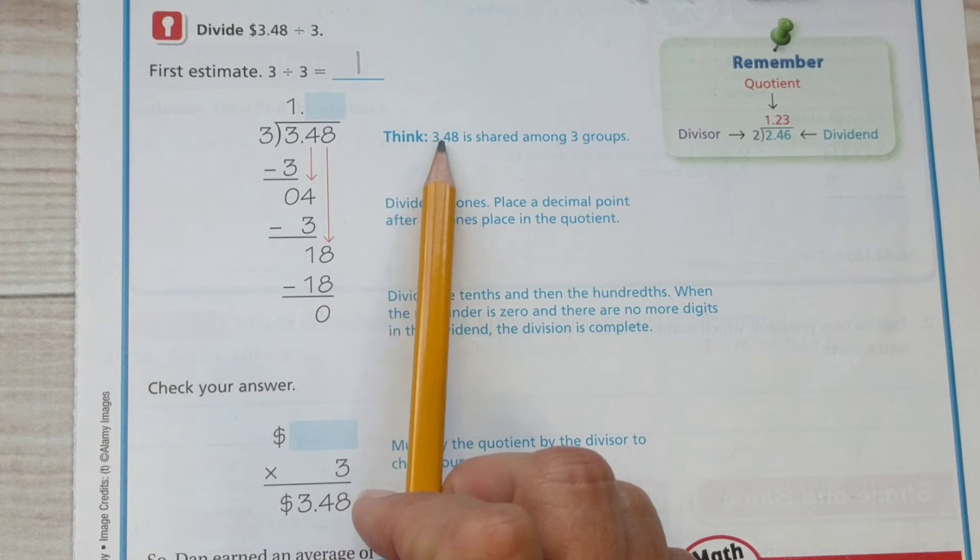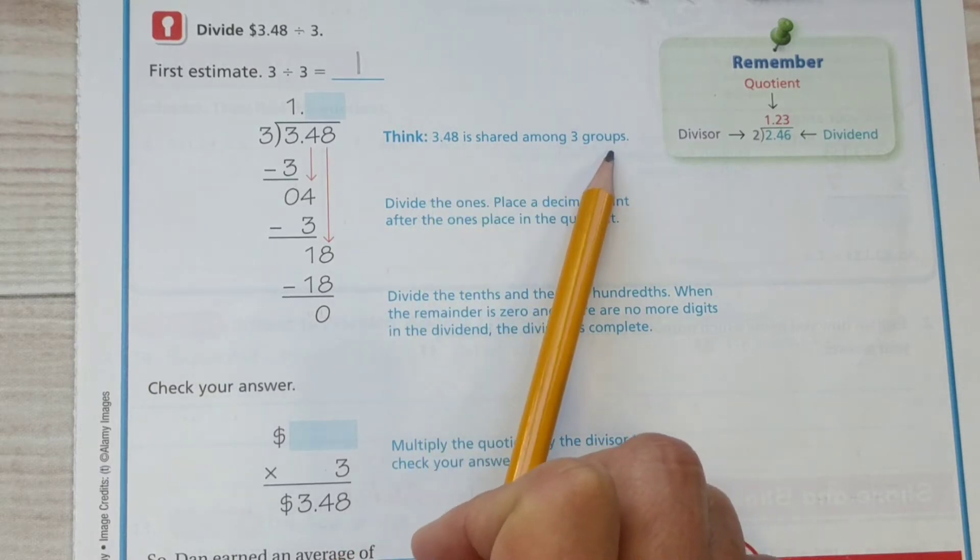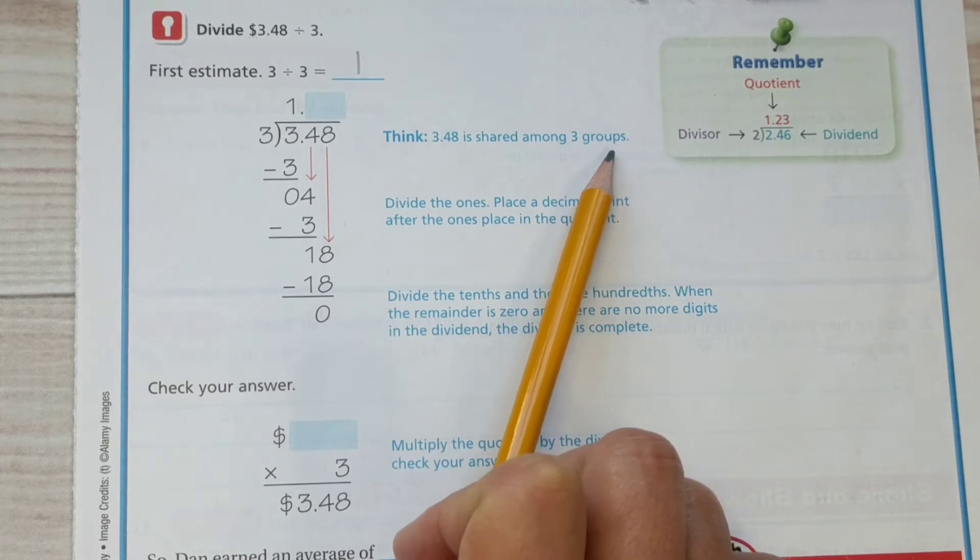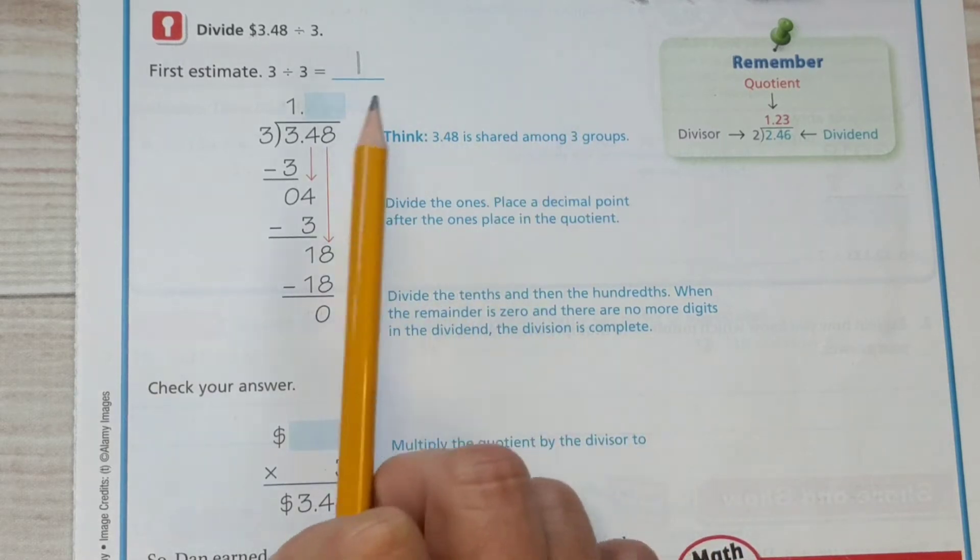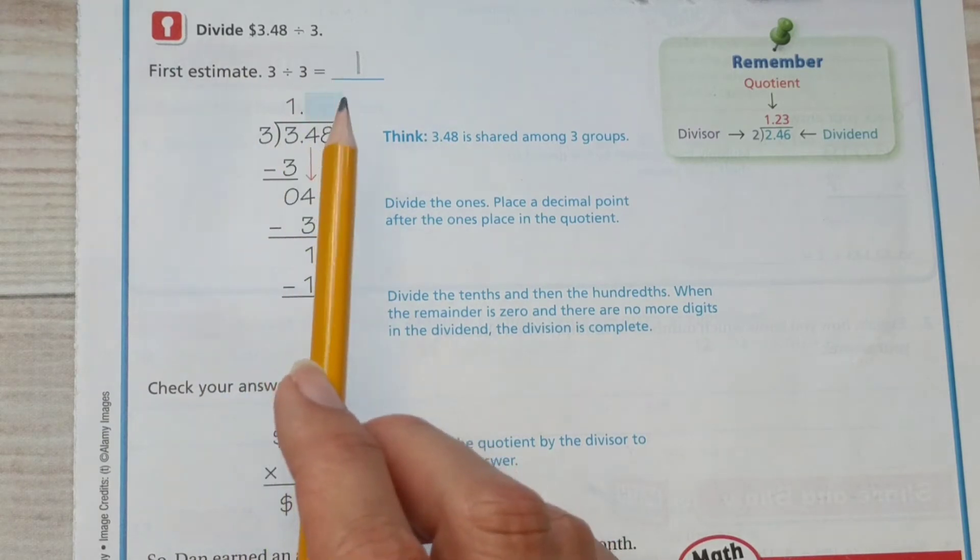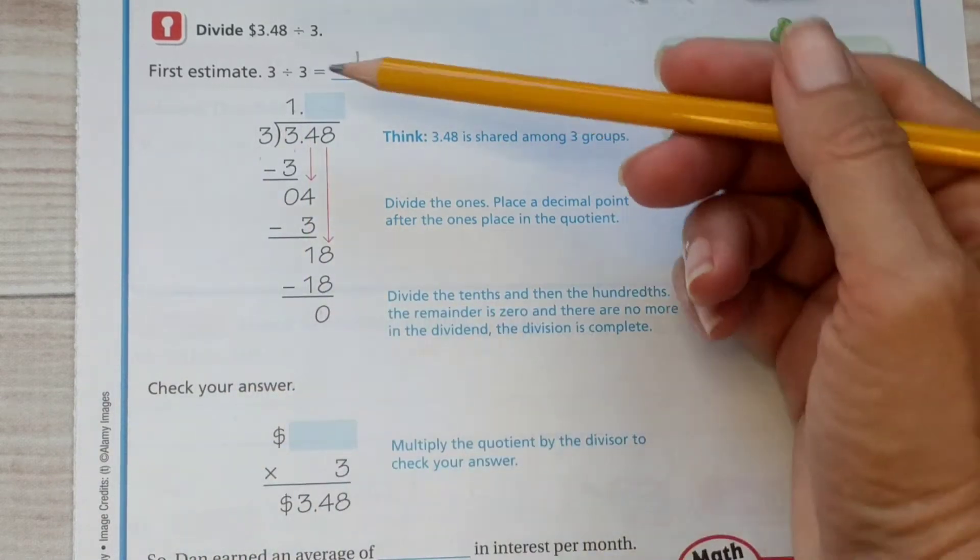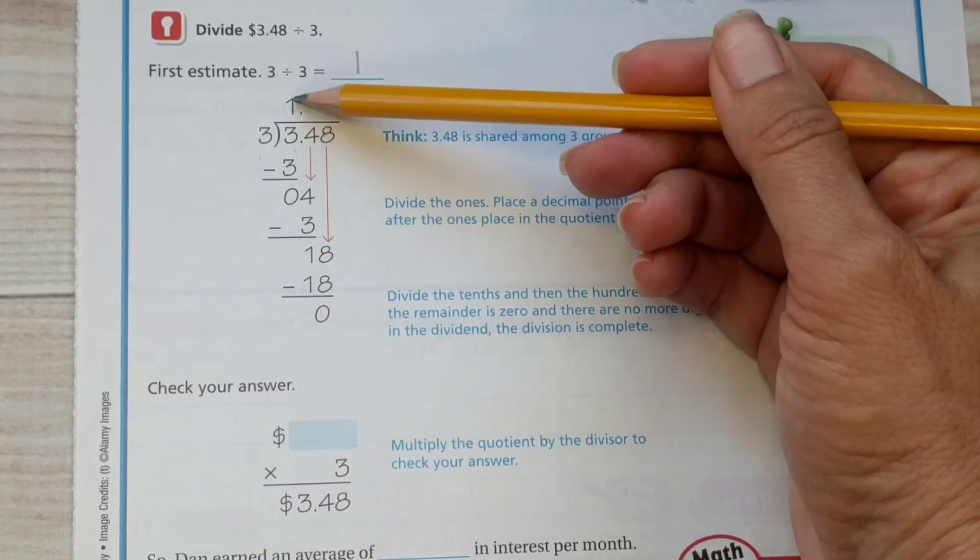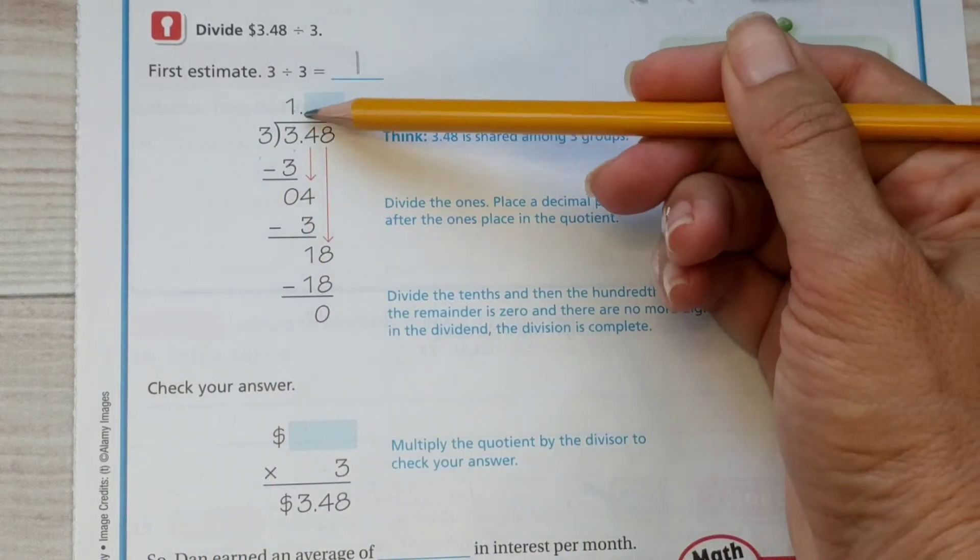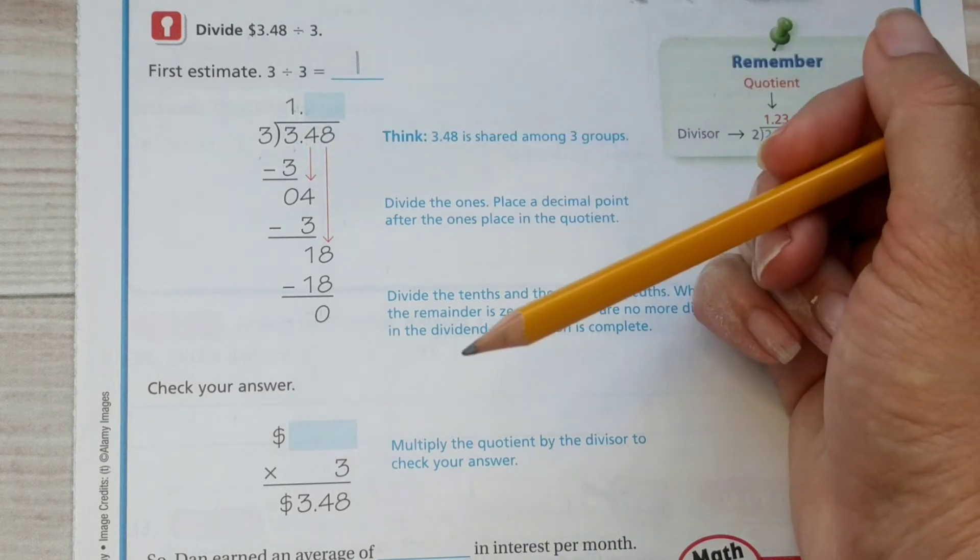So in the notes, three and 48 cents or three and 48 hundredths is shared among three groups. Therefore, we're going to divide it into, divide them down to just how much it is per group, each group. So three goes into three one time. Notice that the one goes directly above that three. And then they brought the decimal up and put the decimal in the quotient.